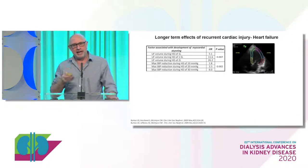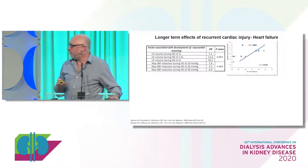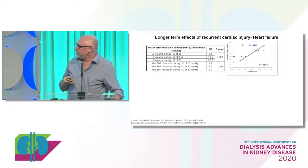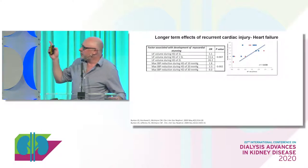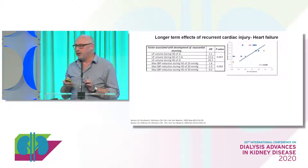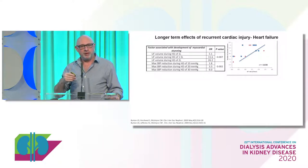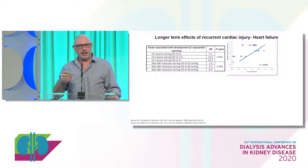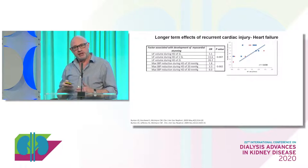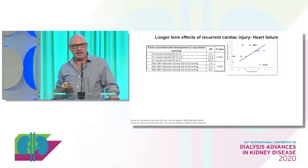If you keep doing that to a piece of heart over time, the inevitable consequence is heart failure. This data from MRI-based studies demonstrates the relationship between how many segments of the heart stunned and how fast the fluid came off. The key issue is there's no threshold effect — it is a continuum. More is worse, less is better. There is no safe ultrafiltration rate. And this curve looks identical when we look at intradialytic blood pressure as well.